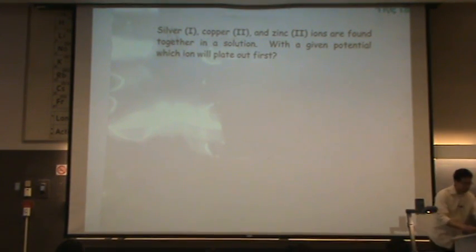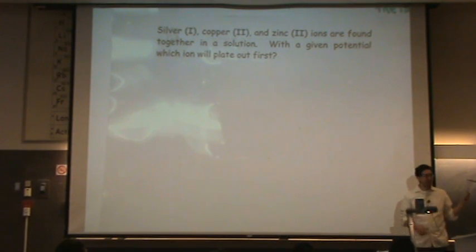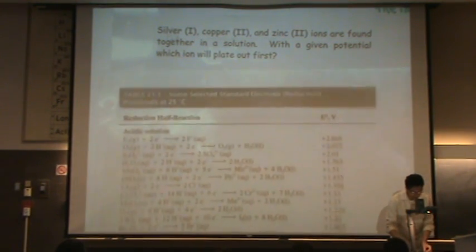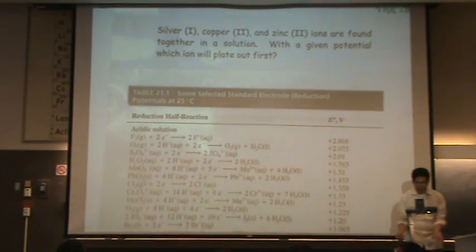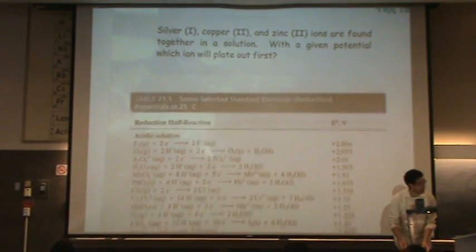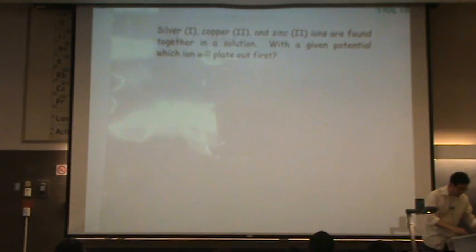Alright, so what you would do to solve this, again you're using this all the time if you haven't figured that out. Get out your standard reduction potential table and write down these reactions. So I'll write them down for you. I'm getting this straight from the table.